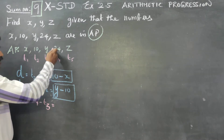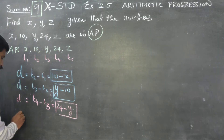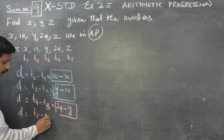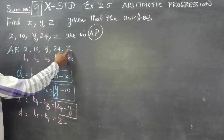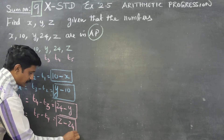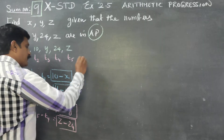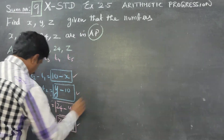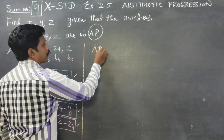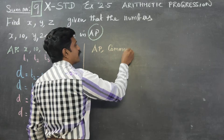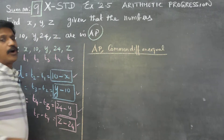t4 minus t3: what is my t4? It is 24. So 24 minus y is another common difference. And t5 minus t4 equals z minus 24, which is the last common difference. In arithmetic progression, common differences are always equal.